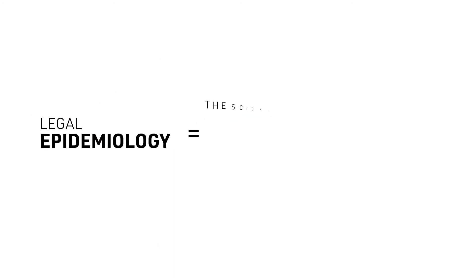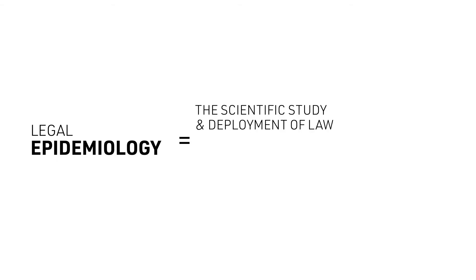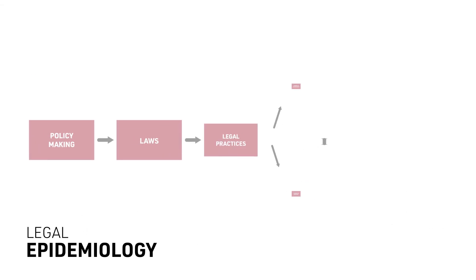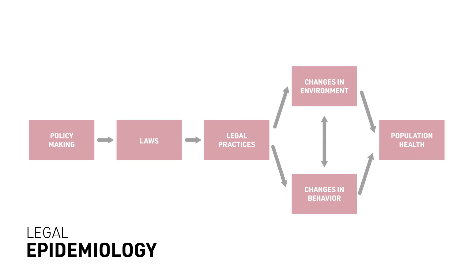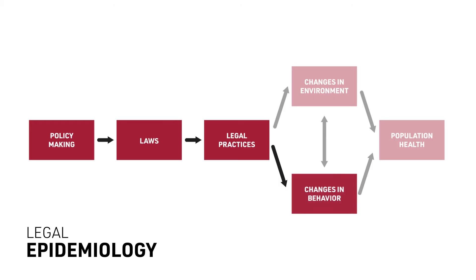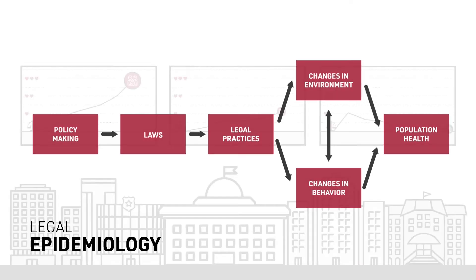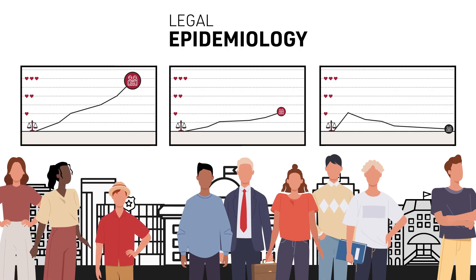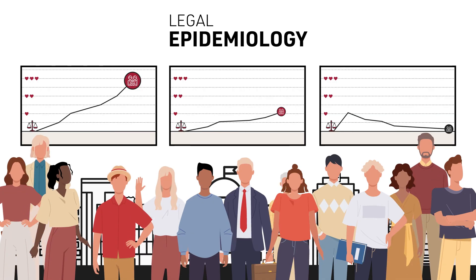We define legal epidemiology as the scientific study and deployment of law as a factor in the cause, distribution, and prevention of disease and injury in a population. This diagram depicts the dimensions of public health law that we're interested in. We start with a policy making process through the creation of those laws, the implementation of those laws, the effects those laws may have on individual behavior or on environments, and finally to the question of what actual effect these laws have on the level and distribution of good health in society. Legal epidemiology is based on a proposition that a country, a state, a city that pays attention to the facts is going to make better decisions than one that doesn't.